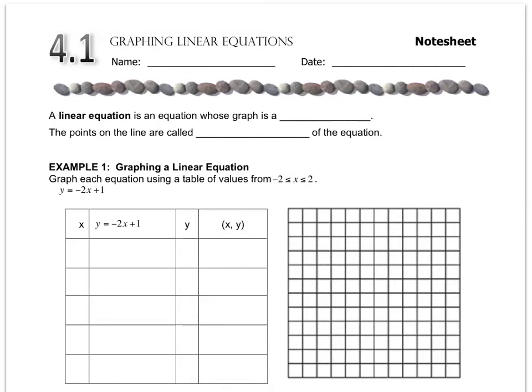This lesson starts our chapter on what are called linear equations, and for the next several years of your math career, you'll be graphing very different types of equations. The one that we concentrate on in 8th grade is called a linear equation. A linear equation is an equation whose graph is a line, and the points on the line are called solutions of the equation.